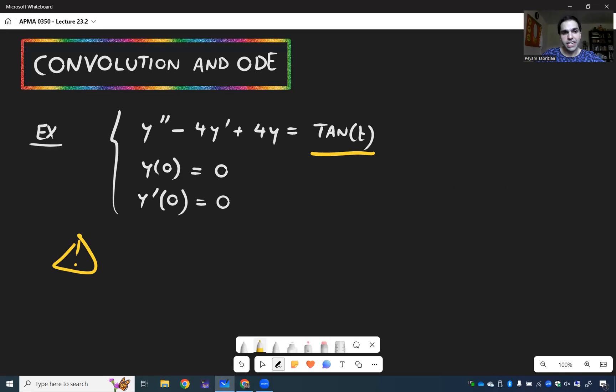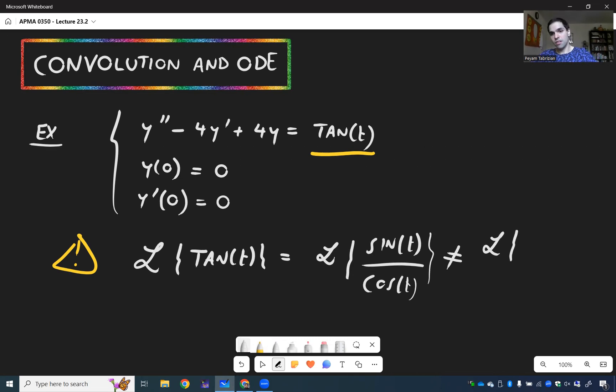In particular, be super careful. The Laplace transform of tangent, which is the Laplace transform of sine over cosine, is not the ratio of Laplace transforms. Because remember, Laplace transforms behave very badly in terms of multiplications and divisions.